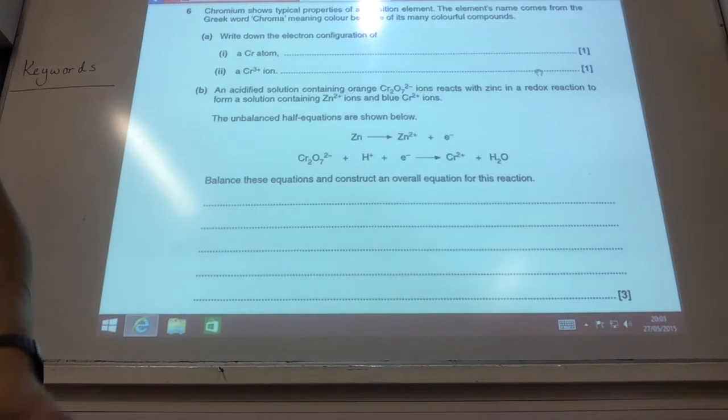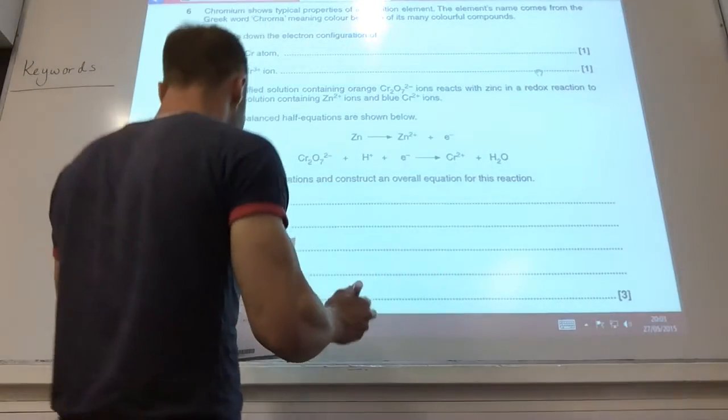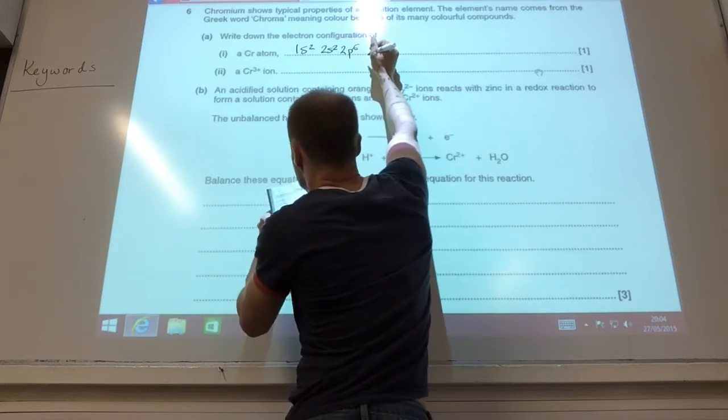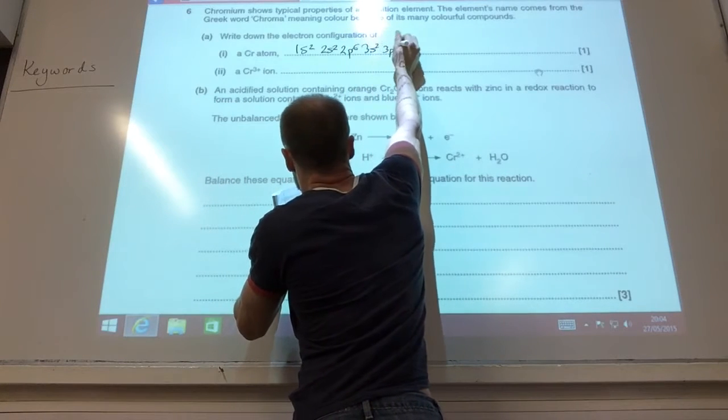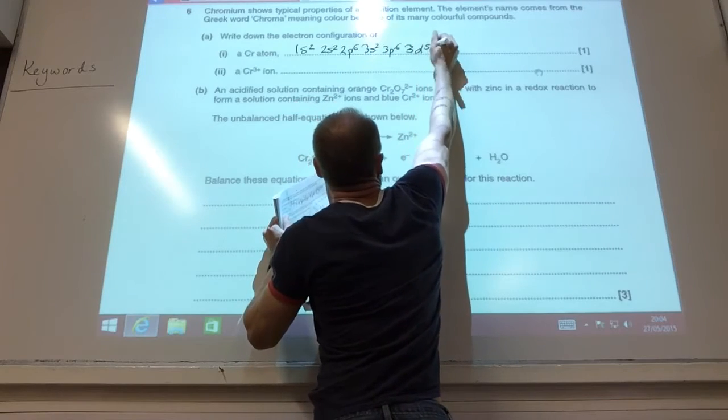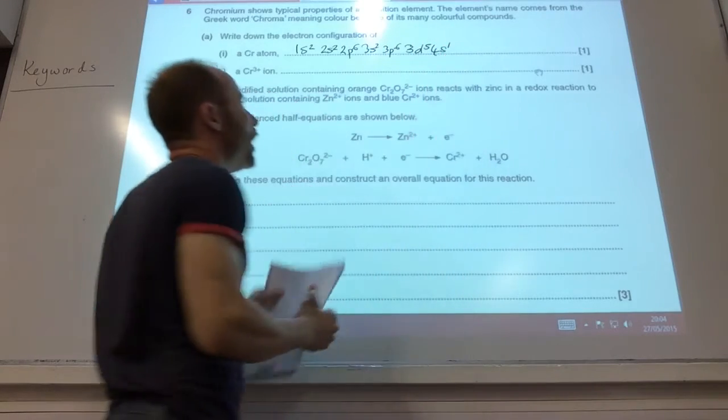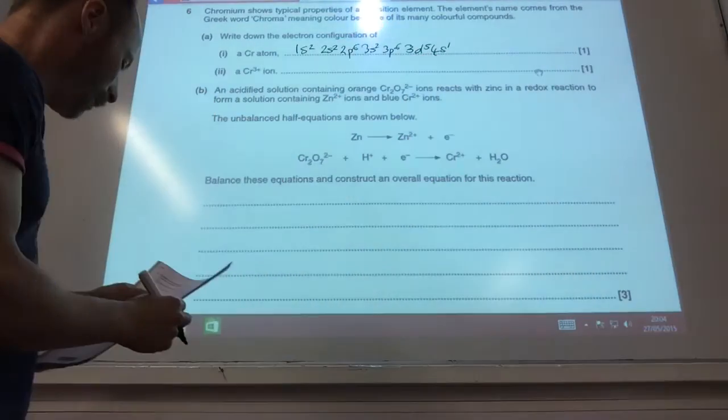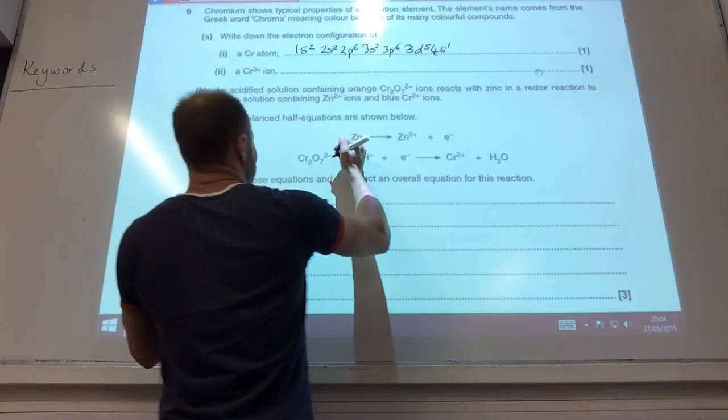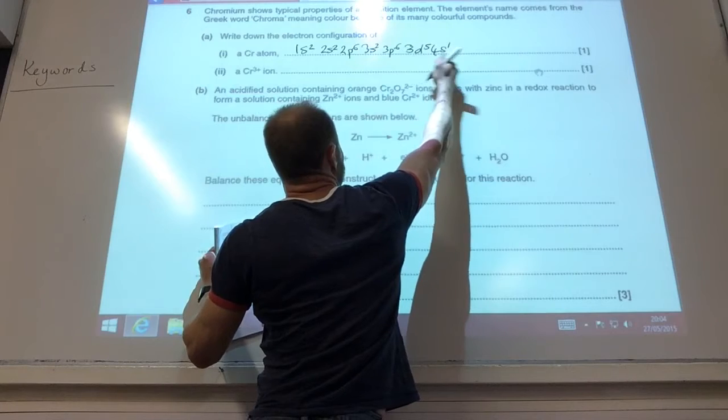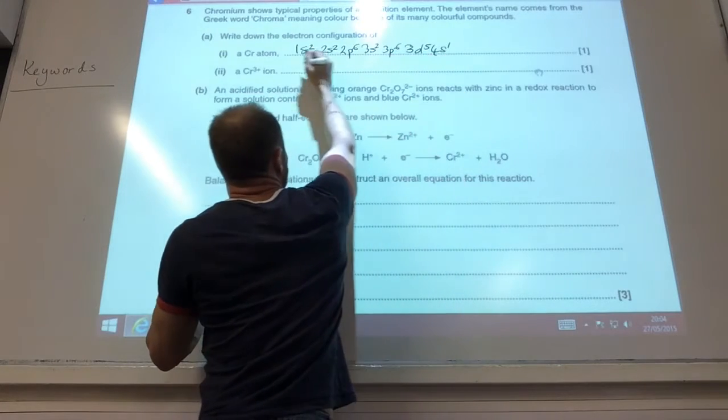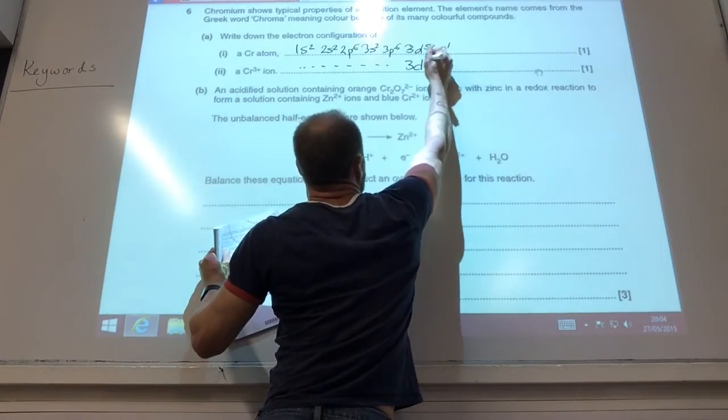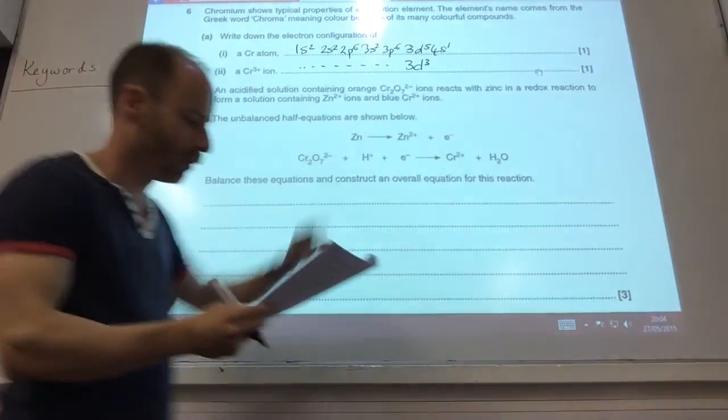Okay, transition metal time. First of all, electronic configuration of chromium. Remember, chromium is one of the strange ones. 3s2, 3p6, 3d5, 4s1. Remember, he's happier with two half-filled subshells. Chromium 3+, I'm going to lose three electrons. Remember, they go from the 4s first. So it's going to end up 3d. I've lost one from there, two from there, 3d3.